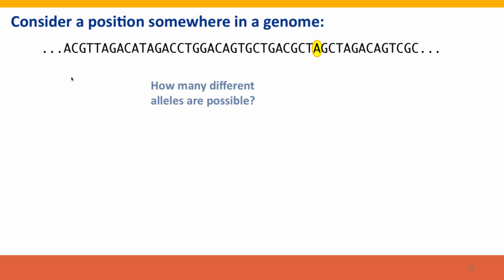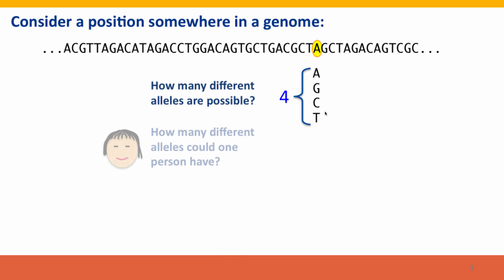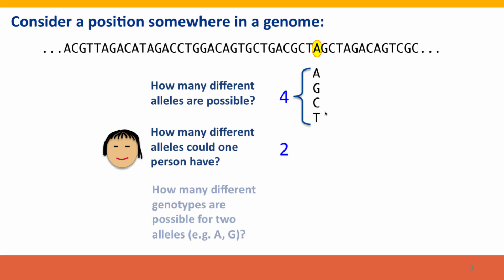Now let's think about genetic variation. How many different alleles are possible at this one position? Four alleles are possible because there are four bases — we could have an A, a G, a C, or a T. What about in a person? A single person could only have two alleles because they only have two versions of the sequence. How many different genotypes are possible for one person? If we're considering two alleles, say A and G, there are three different genotypes possible for a person at any one position.